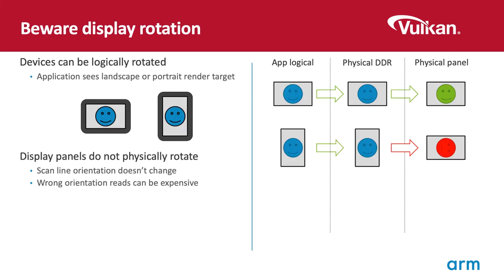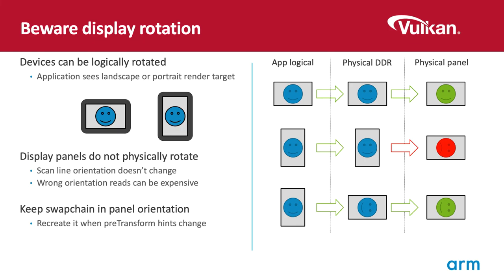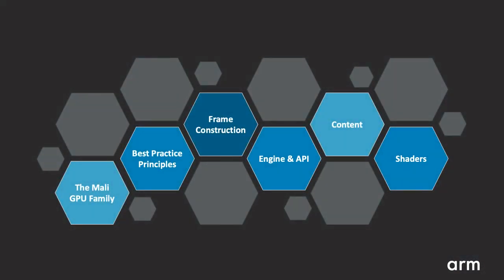Mobile devices can be rotated, with the application view typically rotating to match the logical orientation of the device rather than the physical orientation of the panel. It is critically important for display controller efficiency that the orientation of the frame buffer in memory matches the physical scan-out orientation of the panel. Passing in a buffer in the wrong orientation may incur additional background processing, using either a dedicated composition engine or the GPU itself, which will eat into your game's power budget. For OpenGL ES, this is all negotiated transparently by the driver. But for Vulkan, the application developer has to handle panel rotation events. Every frame, check the pre-transform hint in the swapchain, and ensure that your swapchain output images match the panel orientation.